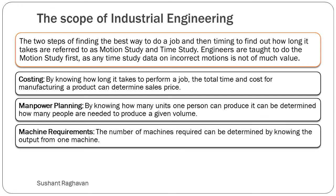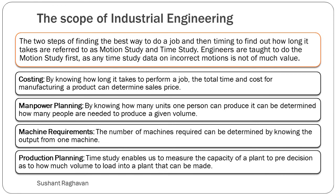Machine requirements: the number of machines required can be determined by knowing the output from one machine. Production planning: time study enables us to measure the capacity of a plant to pre-determine how much volume can be loaded into a plant.